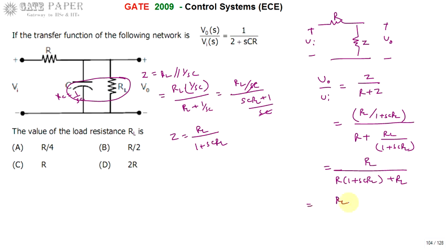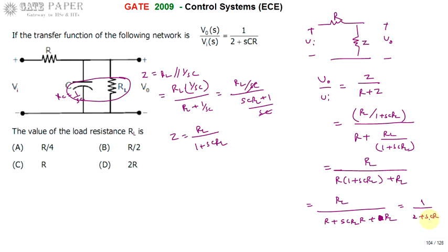This gives V0/VI = RL divided by (R + sCR·RL + RL). The transfer function given is 1/(2 + sCR), so we need to match our expression to this form.